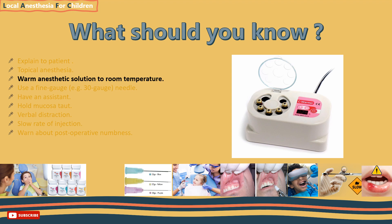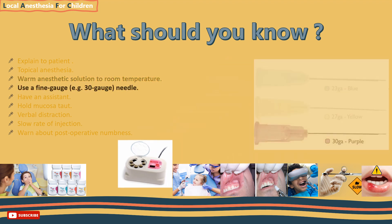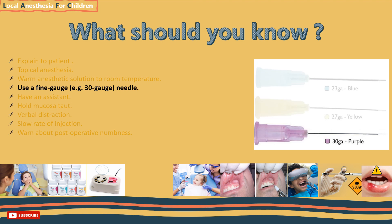Number three: warm the anaesthetic solution to room temperature only and not higher, as cold solutions may cause more pain during application, especially during the colder months. Number four: use a fine 30-gauge disposable needle for less painful penetration. Note that needles in common medical use range from 7 gauge, which is the largest, to 33 gauge, which is the finest.